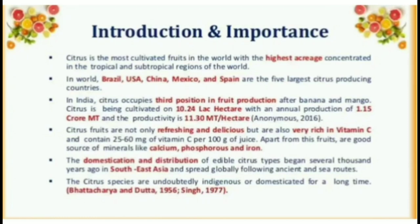In India, citrus occupies third position in fruit production after banana and mango. Citrus is being cultivated on 10.24 lakh hectare with an annual production of 1.15 crore MT and the productivity is 11.30 MT per hectare. Citrus fruits are not only refreshing and delicious but are also very rich in vitamin C and contain 25 to 60 mg of vitamin C per 100 g of juice.